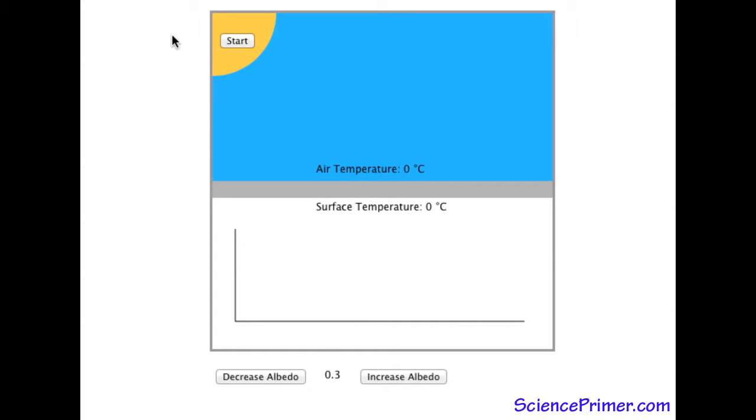This is a demonstration of the albedo interactive illustration from scienceprimer.com. The illustration explores the relationship between the albedo of a surface, its temperature, and the temperature of an overlying volume of air. Be sure to check out the illustration itself at scienceprimer.com. A link is in the video description.